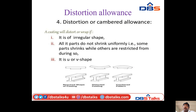Next, distortion allowance. Sometimes a casting gets distorted during solidification due to its typical shapes. Distorted castings are of irregular shapes — all parts do not cool uniformly. Some parts sink while others are restricted. Castings of shapes such as U, R, V, T, L, etc. tend to solidify and distort due to non-uniform cooling stresses.